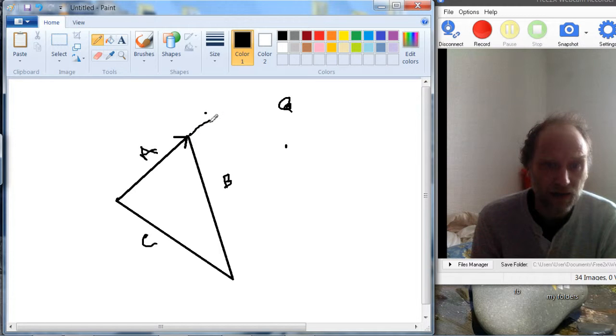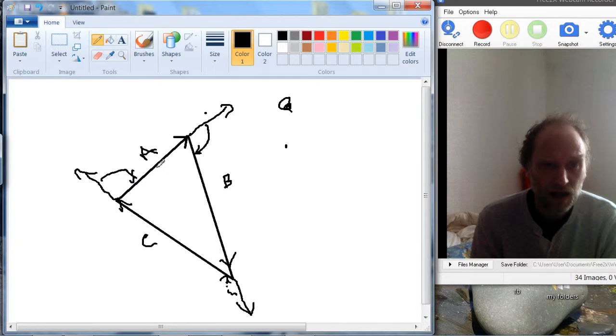So, you're facing out this way and you need to turn this way to face this line. And then you do the same here, so you're facing this way and you need to turn this angle so that you're facing this line. And then from here, you have to turn this angle before you are facing the same way that you started along the line A.